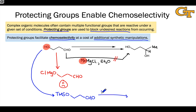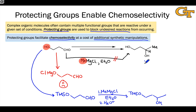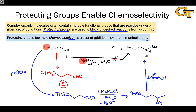We can then treat with our methyl Grignard conditions, and we'll want to do an aqueous acidic workup to protonate the alkoxide oxygen. This gives us a product that is almost our target. All we have to do is remove the TMS group through deprotection. So two additional steps were required — protection and deprotection — however, we were able to react the aldehyde chemoselectively: in the Grignard addition step, only the aldehyde reacted, and the silyl ether was unreacted. Protecting groups are very commonly used for this purpose.